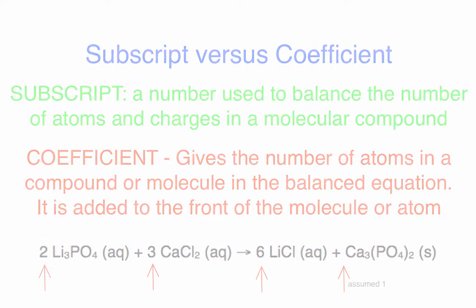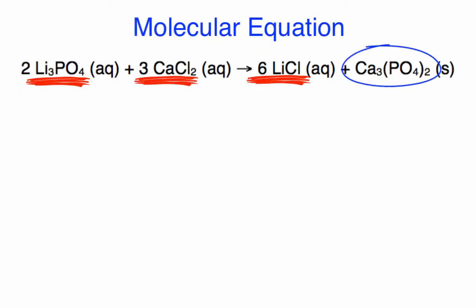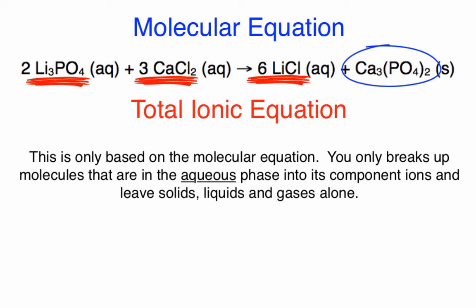So back to the equation: lithium phosphate, calcium chloride, and lithium chloride are all aqueous solutions, whereas calcium phosphate is a solid. When you write the total ionic equation, the aqueous states will be broken up into their component ions — taking into account the coefficient and subscript — while calcium phosphate, being a solid, would not break down and is written as is.